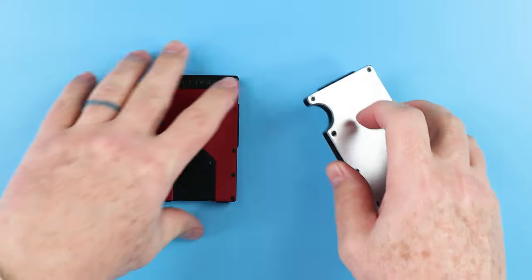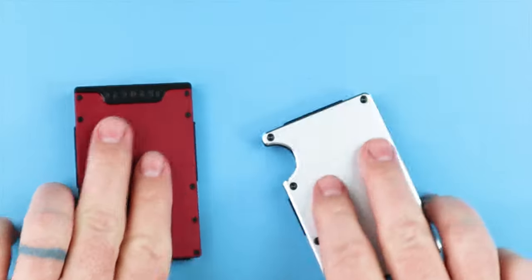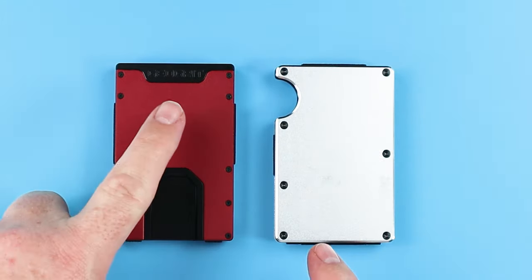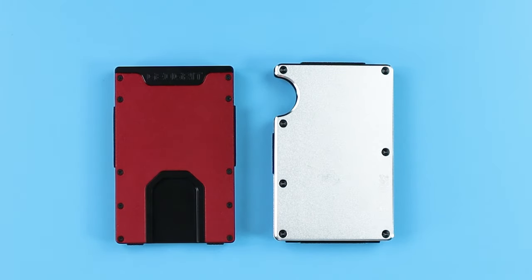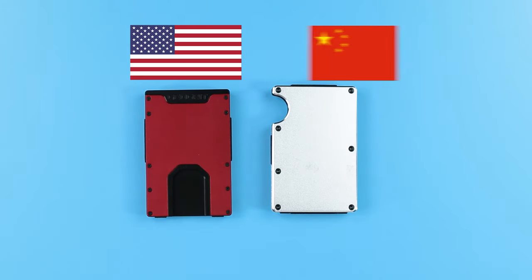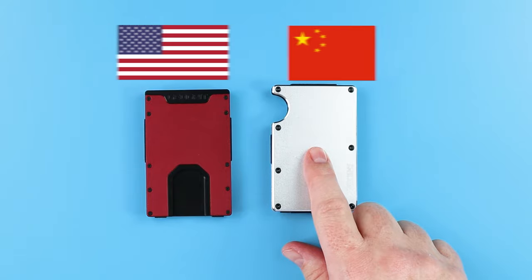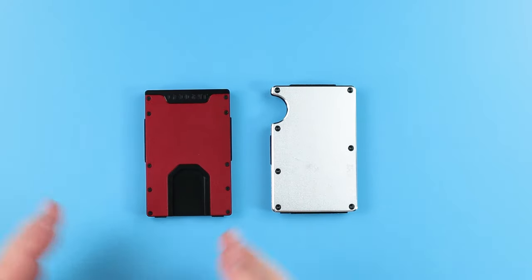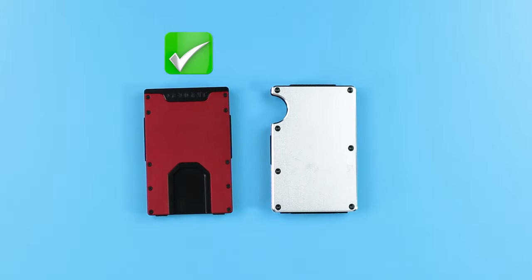For comparison, let's stick, so that we have both money clips involved here. And we'll take a look at the difference between the GeoGrit and the Ridge. Now the GeoGrit is made in the United States. The Ridge is made in China. So what's the winner? Well, I'm gonna go with GeoGrit because I really like the fact it's made in the U.S.